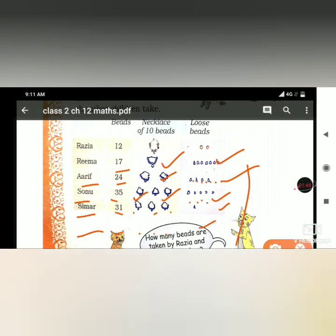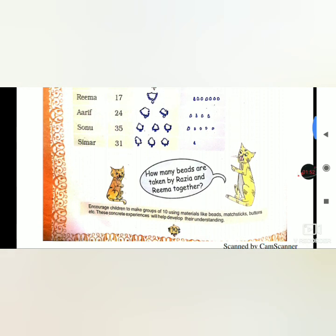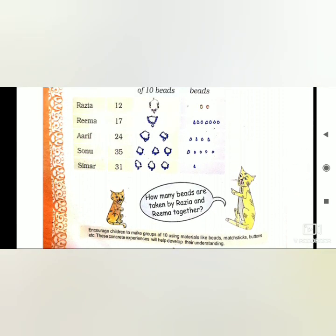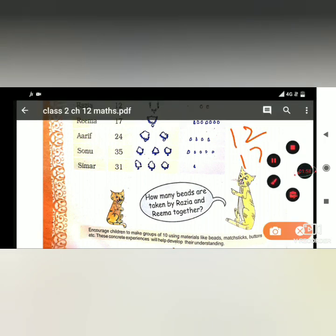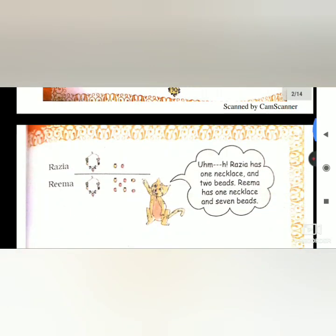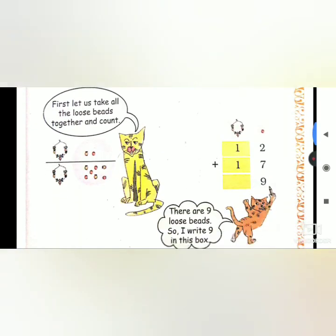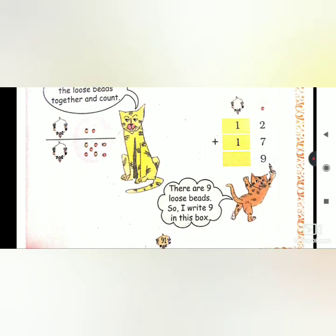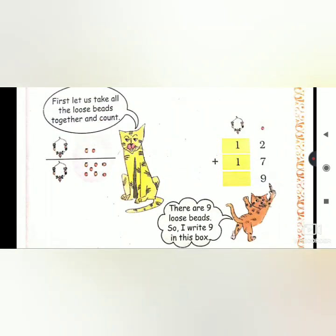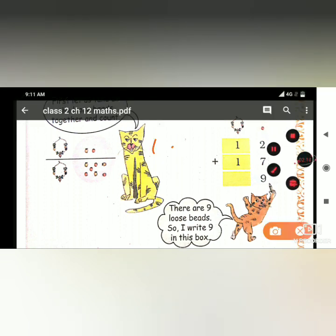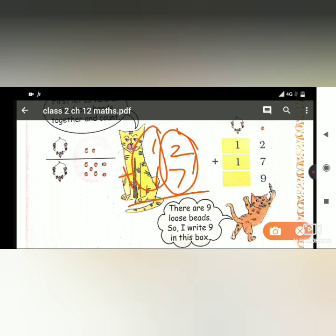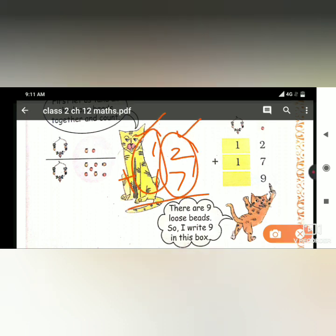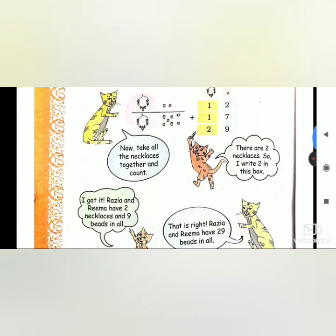How many beads are taken by Razia and Rima together? Razia has 12 and Rima has 17, so total 29. They have taken 29 beads altogether. That's why the calculation shows 12 plus 17 equals 29.